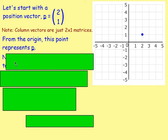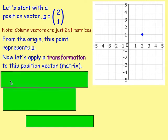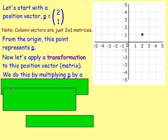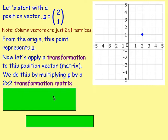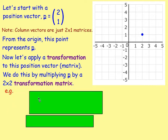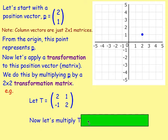Let's apply a transformation to this position vector. Again, this position vector is just a matrix. What we do is we multiply P by a 2 by 2 transformation matrix. Let's say we have the transformation matrix T, and it has the entries 2, 1, negative 1, 2. Let's multiply them together — our transformation matrix multiplied by our vector or matrix P.